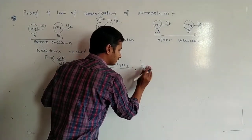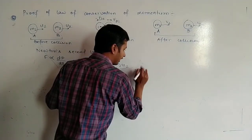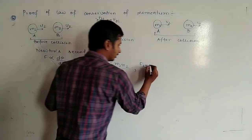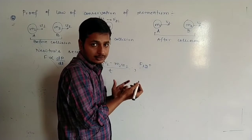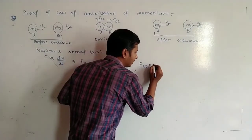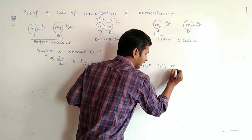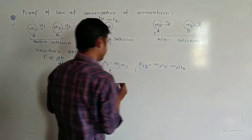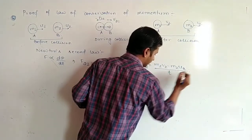f of 1 due to 2, here the change is happening for 2. So it will be m2v2 minus m2u2 divided by t.